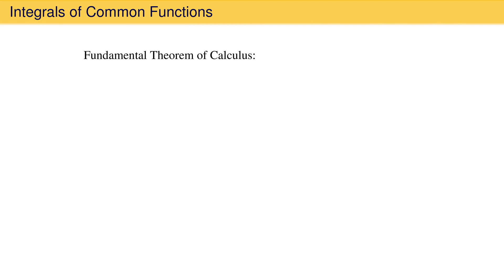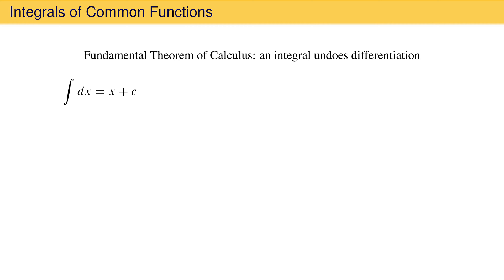The fundamental theorem of calculus can be summarized crudely as: an integral undoes differentiation. We can use this to understand the origin of some common integrals, such as the integral of 1 times dx. To evaluate this, we try to find the function that when differentiated gives 1. This is, of course, x, but because adding any constant would also give 1 when differentiated, we add a constant of integration called c.